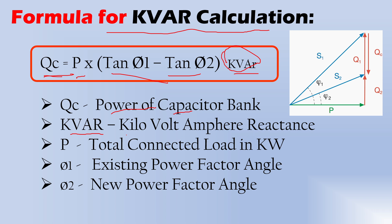kVAR — kilovolt ampere reactive — is the unit of the capacitor bank. P is the total connected load in kilowatts, which equals the total load of your building, warehouse, or any project. φ1 and φ2 are the power factor angles. φ1 is the existing power factor angle — your present power factor — and φ2 is the improved target power factor angle.